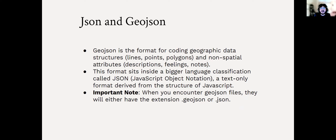Now I want to go over some of the file types. First, GeoJSON: GeoJSON is the format for encoding geographic data structures — things like lines, points, polygons, and non-spatial attributes like descriptions, feelings, and notes. This format sits inside the broader JSON, or JavaScript Object Notation, which is a text-only format derived from JavaScript. GeoJSON files will have either a .geojson or .json extension, and you'll most commonly encounter GeoJSON when working with the mapping tools.